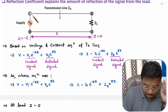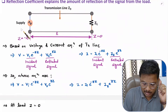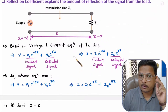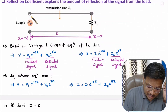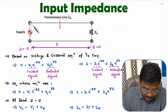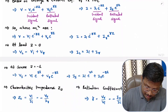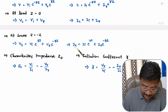Based on this understanding we can derive the input impedance, which is measured at the supply side. Let me note down these equations, then I'll derive the equation. Input impedance is the impedance measured at the supply end — it is the ratio of supply voltage VS divided by supply current IS.